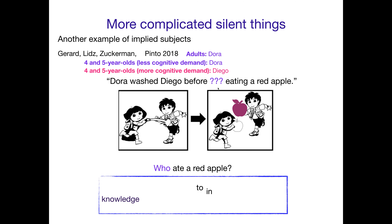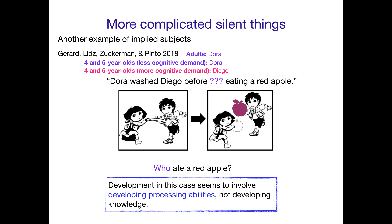What we can take away from this is that development in this case seems to involve developing processing abilities — the ability to deploy the knowledge that you have — not really developing the knowledge itself. Because in a less cognitively demanding environment, the children seem to have the adult-like knowledge of how to interpret these implied subjects. It's just that when things get distracting, they can't deploy that knowledge as effectively.